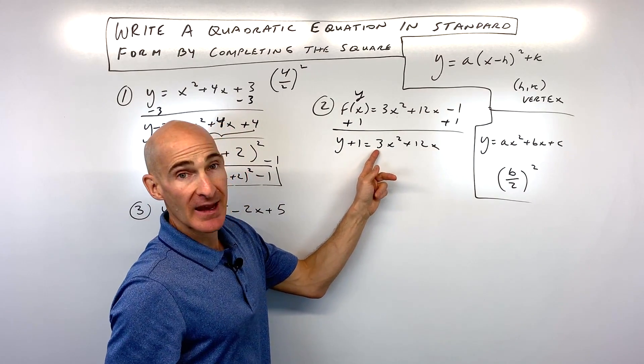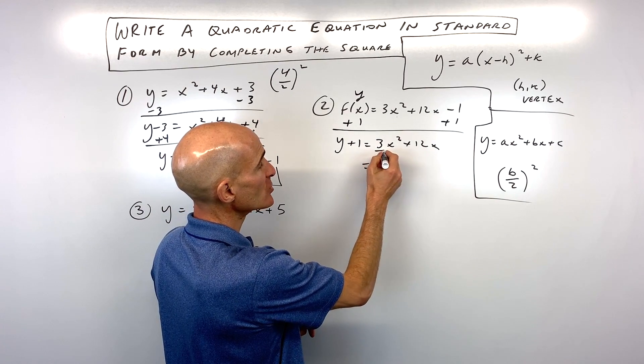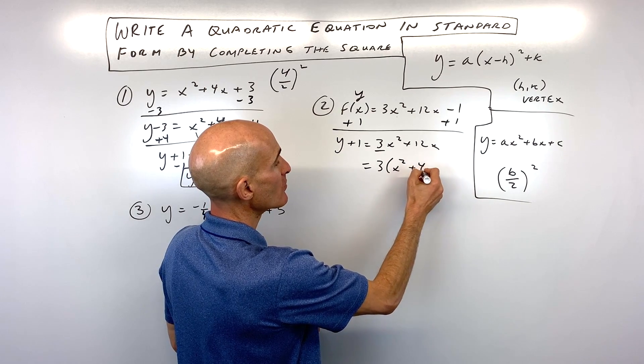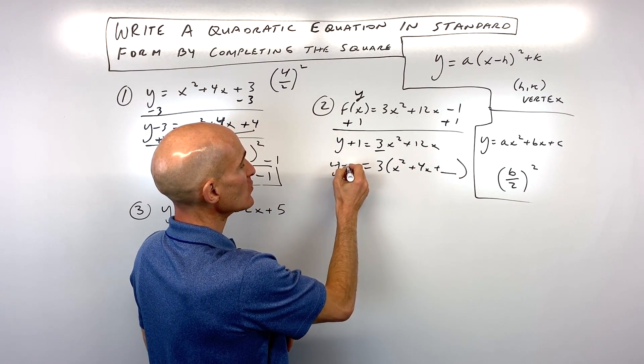What I'm going to do is I'm going to factor out that coefficient, the 3. We're not taking the greatest common factor, we're just factoring out the 3 out of both of these two terms here. So we have 3 times x squared plus 4x plus blank, okay, equals y plus 1.